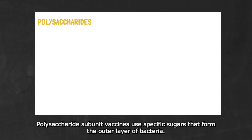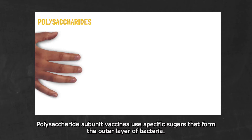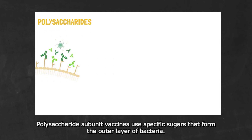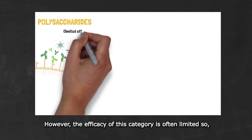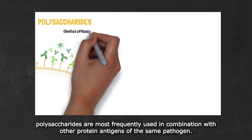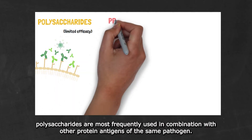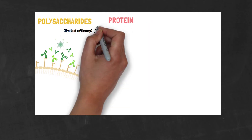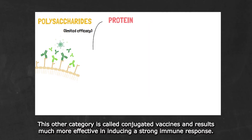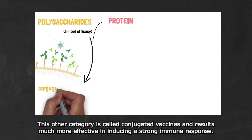Polysaccharide subunit vaccines use specific sugars that form the outer layer of bacteria. However, the efficacy of this category is often limited, so polysaccharides are most frequently used in combination with other protein antigens of the same pathogen. This other category is called conjugated vaccines and results much more effective in introducing a strong immune response.